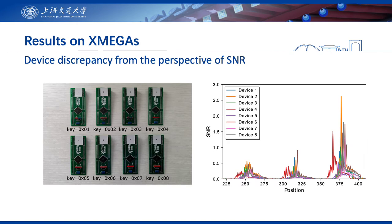The picture on the left shows the eight XMEGA chips. We initialize each device with a different secret key, then calculate the signal-to-noise ratio of each device, characterizing the leakage. We can conclude that the leakage differs and each chip has its own leakage characteristics. We notice that device 4 is shifted apparently in time. This could be explained by an internal clock issue, because we expect 625 points in 10 clock cycles, but we only observe 616 points for device 4.